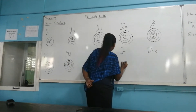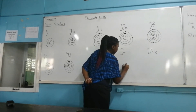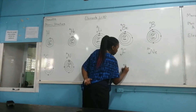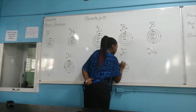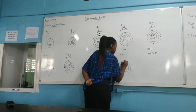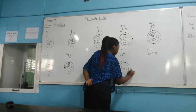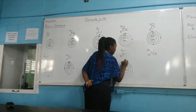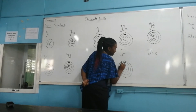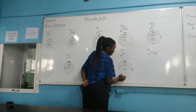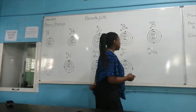Element number 9 is fluorine. It's a very toxic element — actually the most electronegative element. It's also found in our toothpaste to support healthy gums by killing microbes that cause bad oral hygiene. We have two electrons on the first shell and seven electrons on the second shell.